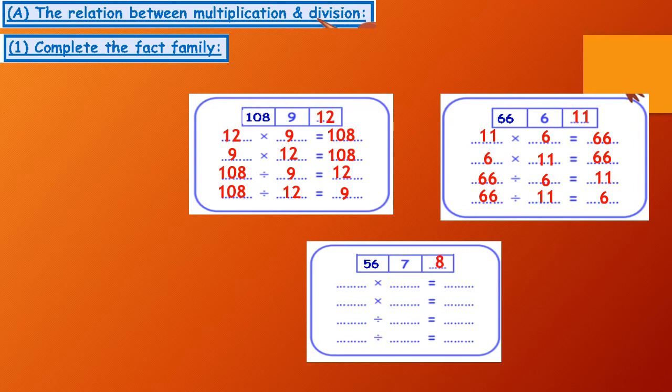56 divide 7 equals 8. So, 7 by 8 equals 56, or 8 by 7 equals 56, 56 divide 8 equals 7, 56 divide 7 equals 8.